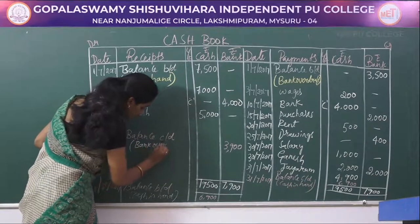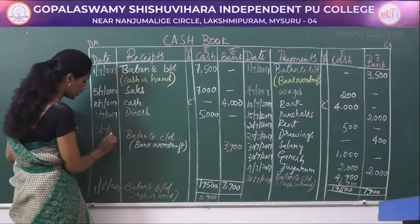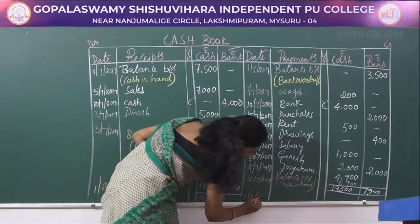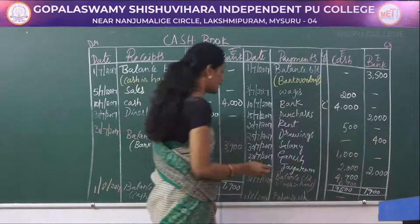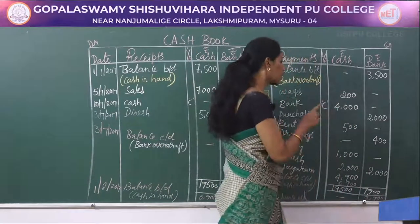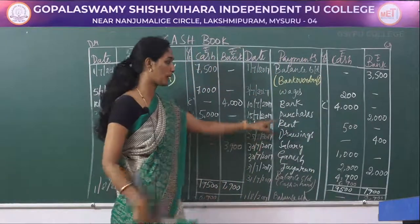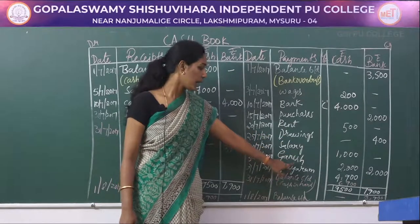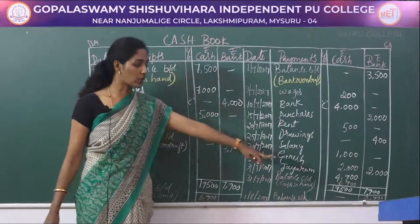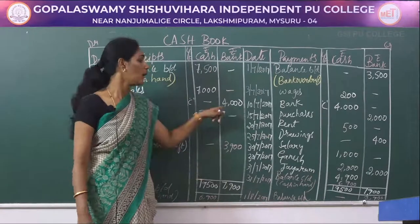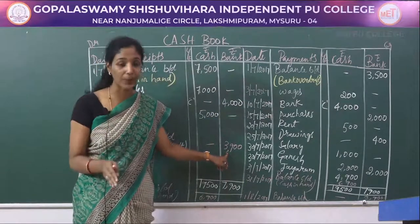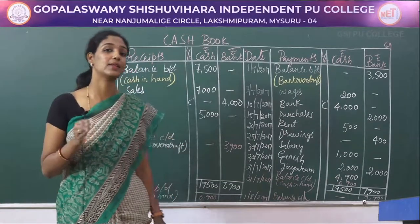This balance of 3900 is a bank overdraft as on 31/7/2017. Write 'balance carried down' on the debit side and carry it forward to the credit side as 'balance brought down' on 1/8/2017, entering rupees 3900 in the bank column. This means we still owe rupees 3900 to the bank — it is considered bank overdraft as on 1/8/2017.